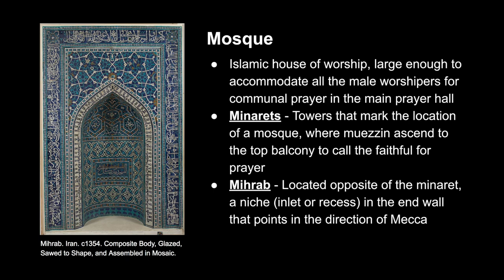Next, we have minarets, which are the towers that mark the location of a mosque. A church official climbs this tower to the top balcony, calling Muslims to prayer — this official is called a muezzin. Another part of a mosque is a mihrab, which looks like a niche or a little recess in the wall that points in the direction of Mecca. As we see in this example, it looks very similar to a doorway. This example also shows evidence of calligraphy and mosaics.